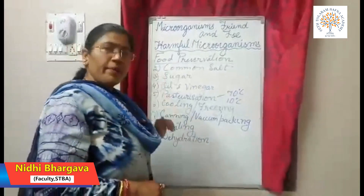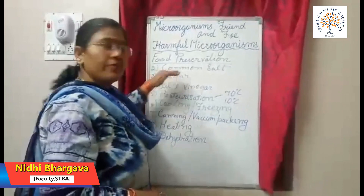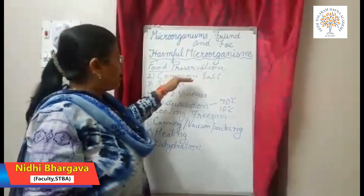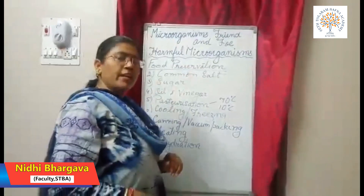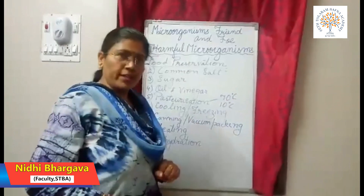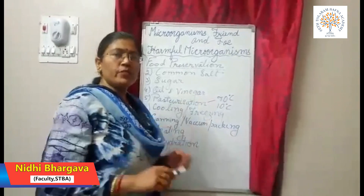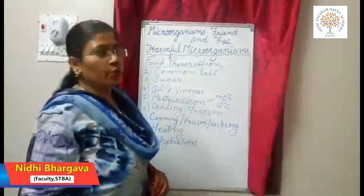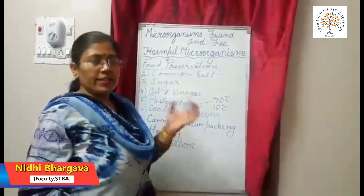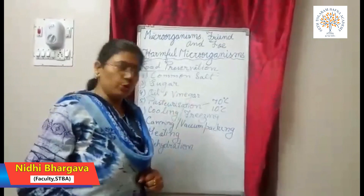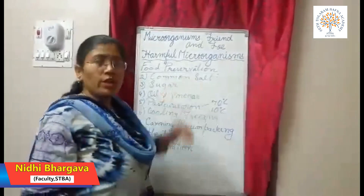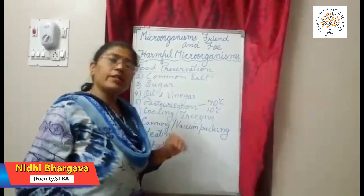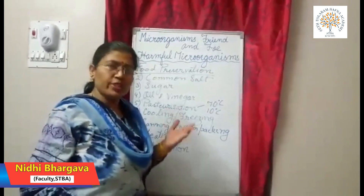The next method is preservation by common salt. Fish and meat are commonly preserved by salting. When salt is applied, it reduces the growth of microbes by drawing out the moisture from the food. Common salt is also used at home to preserve tamarind, raw mangoes, and amla.